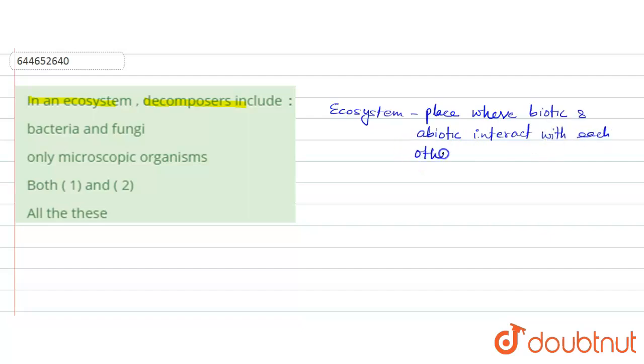In an ecosystem, plants are considered as the producers. Animals are considered as primary, secondary, or tertiary consumers. In general terms, we call them consumers.